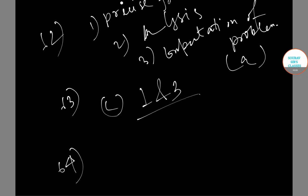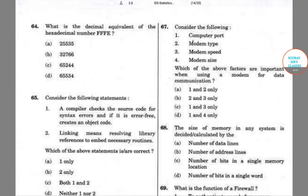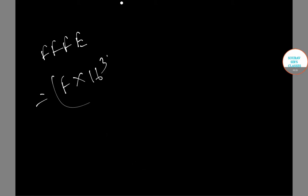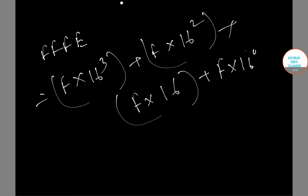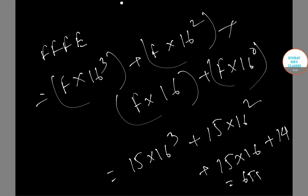Question number 64 has the question of the decimal equivalent of FFFE. So FFFE has F times 16³ plus F times 16² plus F times 16 plus F times 16⁰. This gives us 15 times 16³ plus 15 times 16² plus 15 times 16 plus 14 equals 65534. So our correct option is option D.